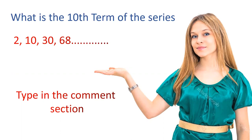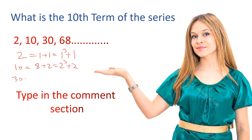Let's see what is the 10th item in this series. 2 is 1 plus 1, that is 1 cube plus 1. And 10 is 8 plus 2, that is 2 cube plus 2. And 30 is equal to 27 plus 3, that is 3 cube plus 3. So the pattern is: the nth term equals n cube plus n.